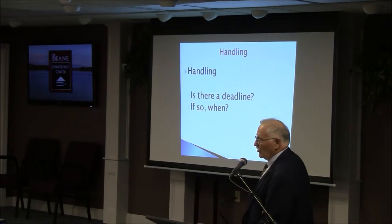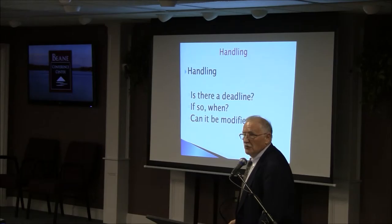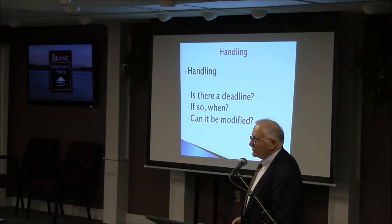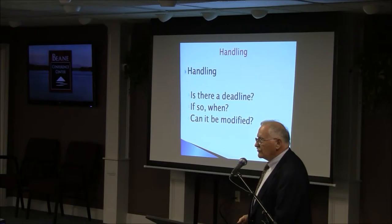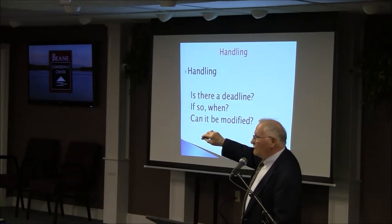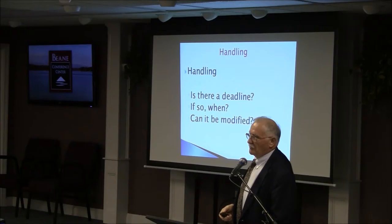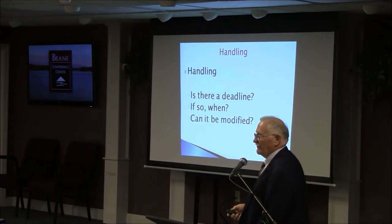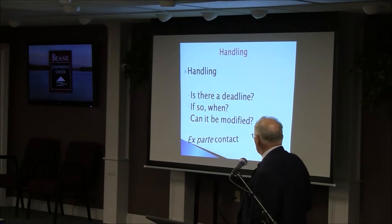Handling: the first thing you need to know is whether there is a deadline. Can it be modified? All deadlines can be modified — it's just a process to do it. The best way is by agreement with the applicant. But don't use 'extended for six months' or 'three months.' Set a date certain — June 30th, July 15th — not 'a month from now.' When does that month end, and what if it falls on a Sunday? Set a date certain.